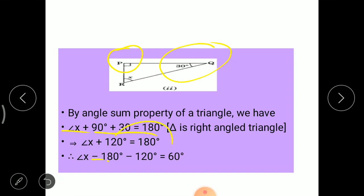So angle x plus 90 plus 30 equals to 180 degrees. So angle x plus 120 equals to 180 degrees. It will be transposed to the right hand side. It becomes angle x equals to 180 minus 120 degrees equals to 60. So angle x is equal to 60 degrees here.